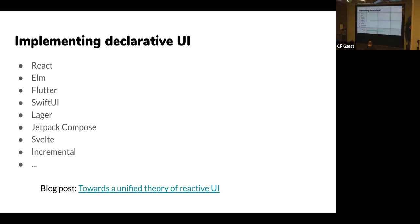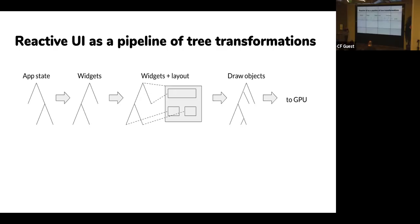The blog post went out a week or so ago, called 'Towards a Unified Theory of Reactive UI.' The central thesis is that reactive UI can be modeled as a transformation — a pipeline of transformations of trees. You're modeling your application state as a tree, your widgets as a tree, layout as annotations to that tree, draw objects you're generating — all of these stages are basically trees changing over time. You want to do a transformation of those trees in response to interactions.